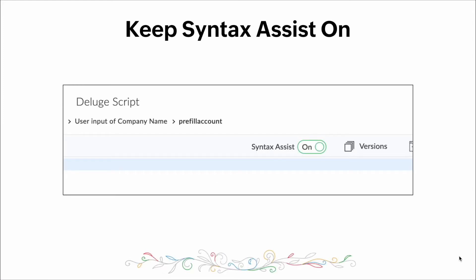So we'll start with Syntax Assist — what is it and how can it help us? Within our Deluge editor, we get a cool feature called Syntax Assist. Working with different scripting languages, it can sometimes be confusing and hard to keep track of the syntax. With Syntax Assist, the editor allows us to make fewer mistakes by providing suggestions as we write our code. Keeping Syntax Assist on can be very productive as it will help you not make so many mistakes while helping you remember syntax.